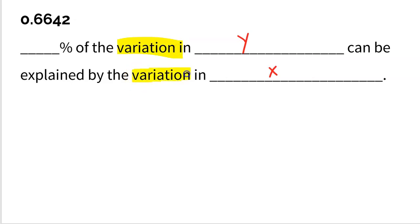Make sure you have the word 'variation' in there twice, because you have to understand that there are lots of Ys and lots of Xs. There's a bunch of different Ys — that's what variation means, they vary — and there's a lot of different Xs as well.